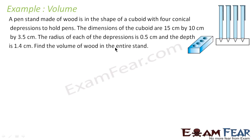The question says that a pen stand made of wood is in the shape of a cuboid with four conical depressions. For example, this is a cuboid, and there are four conical depressions to hold the pen. The dimensions of the cuboid are 15 cm by 10 cm by 3.5 cm.